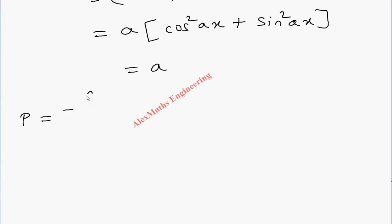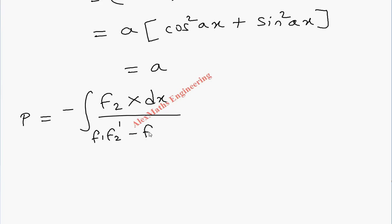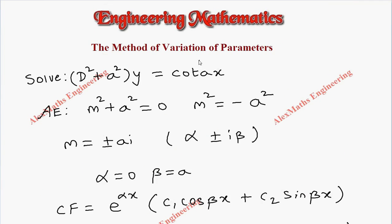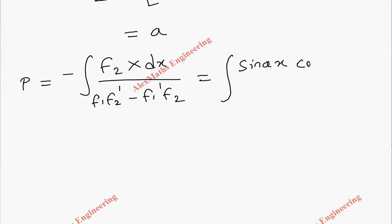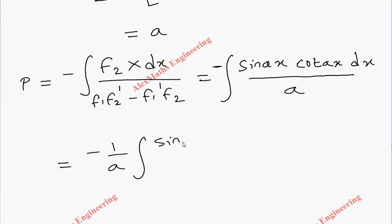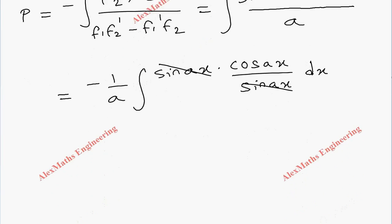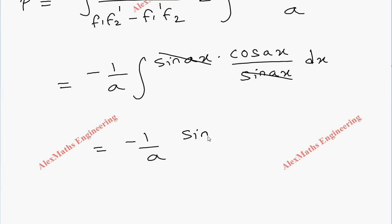Now coming to the calculation of P: minus integral of f2 into X dx divided by the Wronskian. So f2 is sin(ax), and capital X is the right-hand side, which is cot(ax). So we have minus integral of sin(ax) times cot(ax) dx, whole divided by a. Taking minus 1/a outside the integration, sin(ax) times cot(ax) is sin(ax) times cos(ax)/sin(ax), and sin(ax) cancels. The integral of cos(ax) is sin(ax)/a. So P equals minus 1/a² times sin(ax).